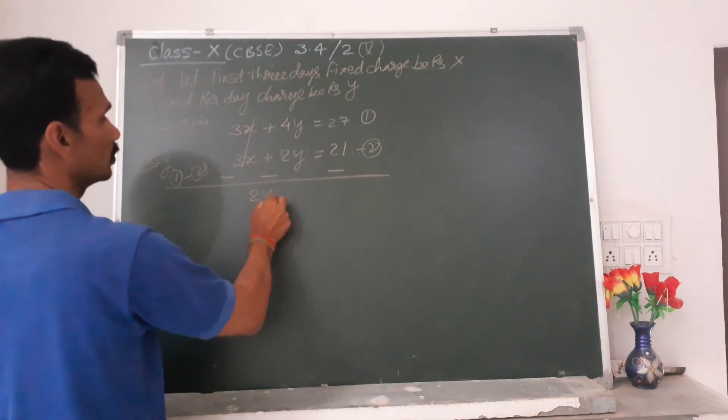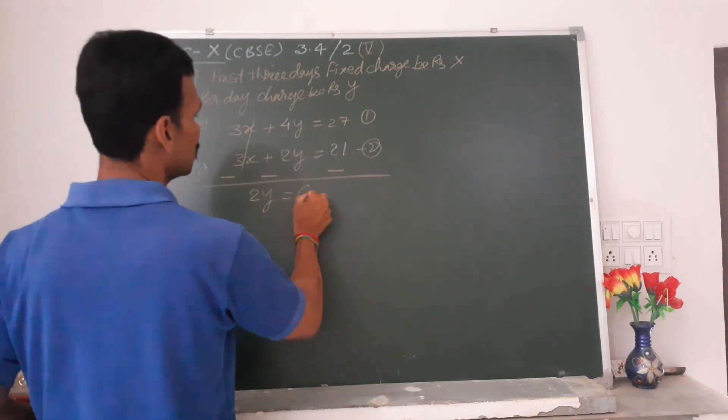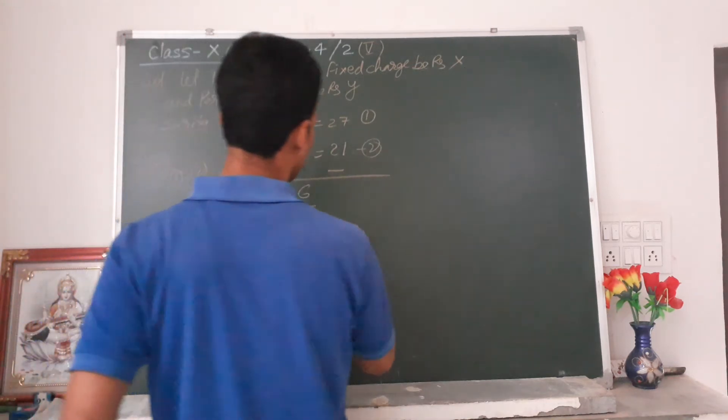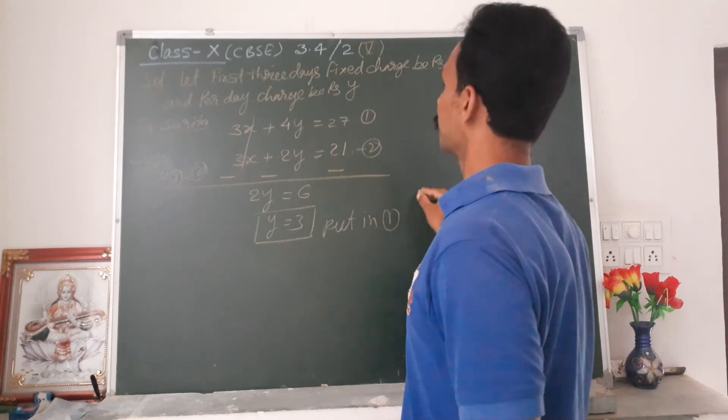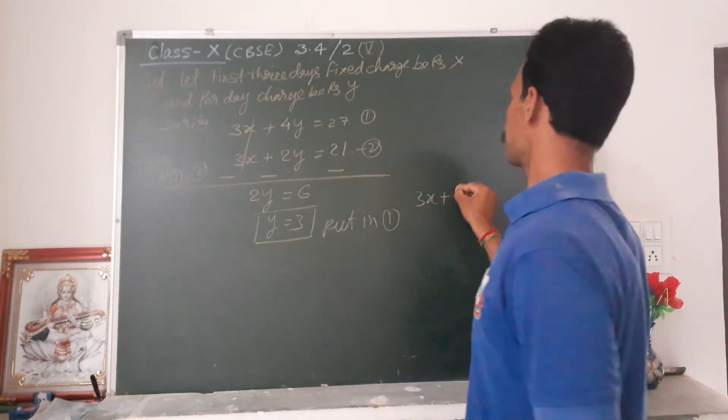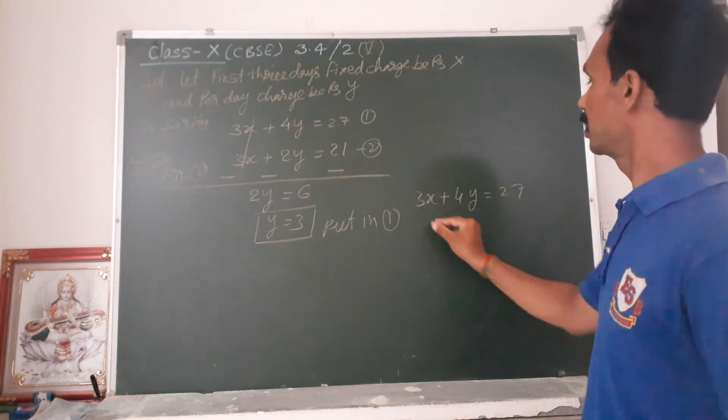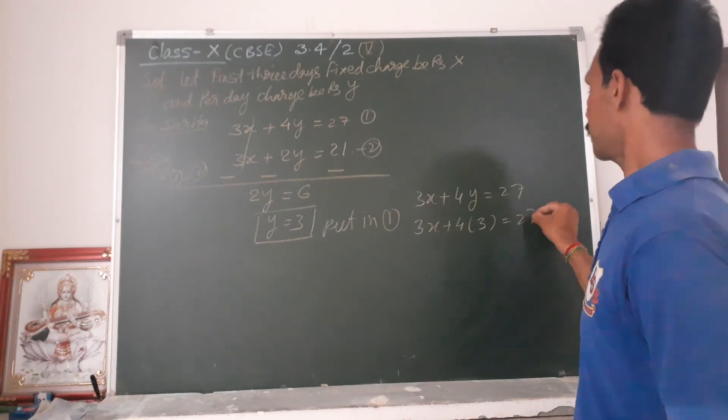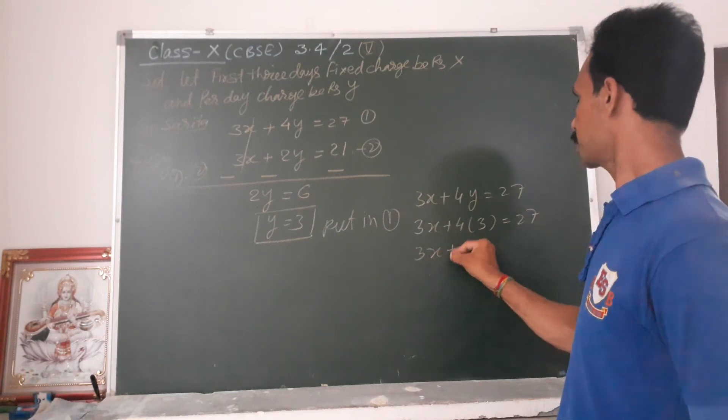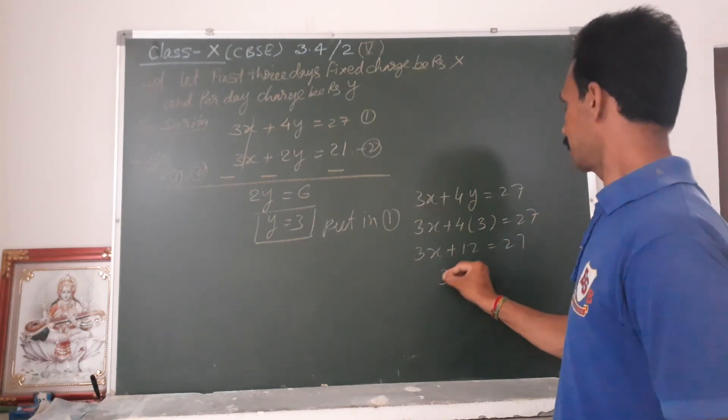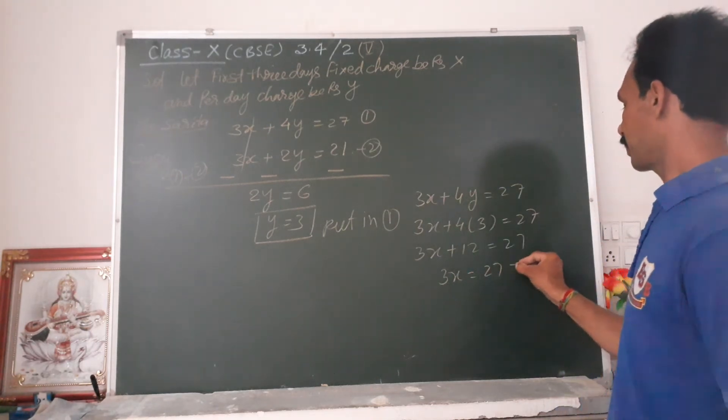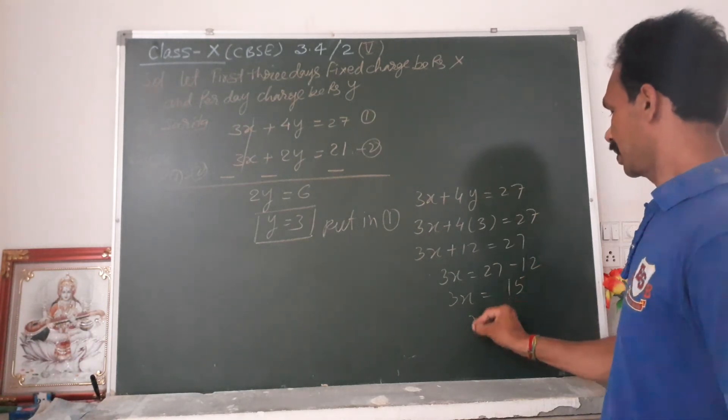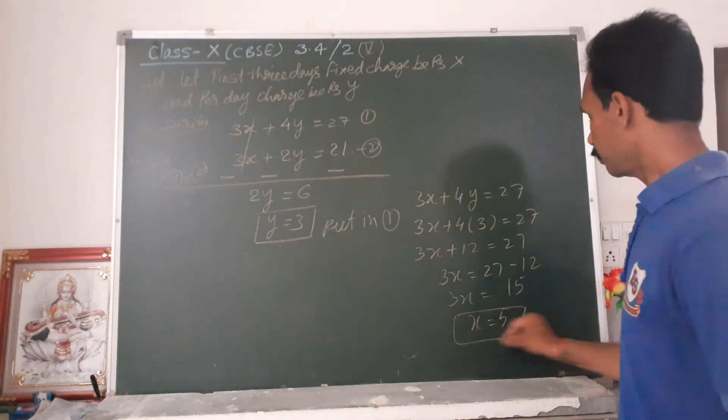Equation one is 3X + 4Y = 27. Then 3X plus one equals 27. Then 3X equals 27 minus 12. So 3X equals fifteen, X equals 5.